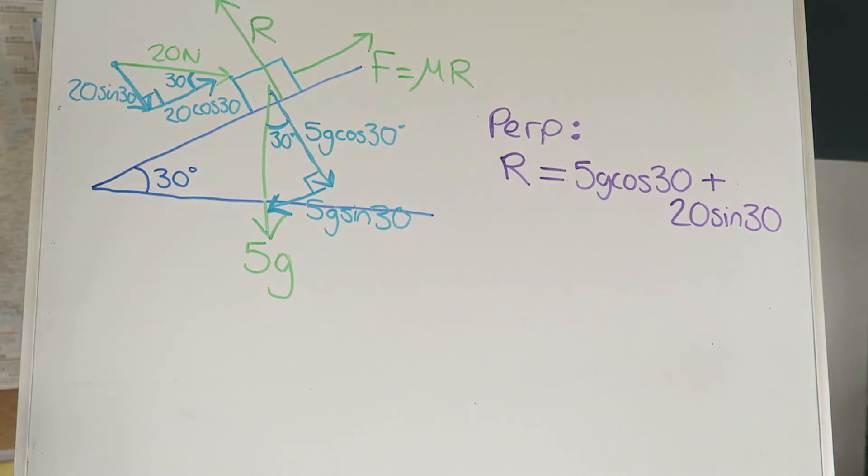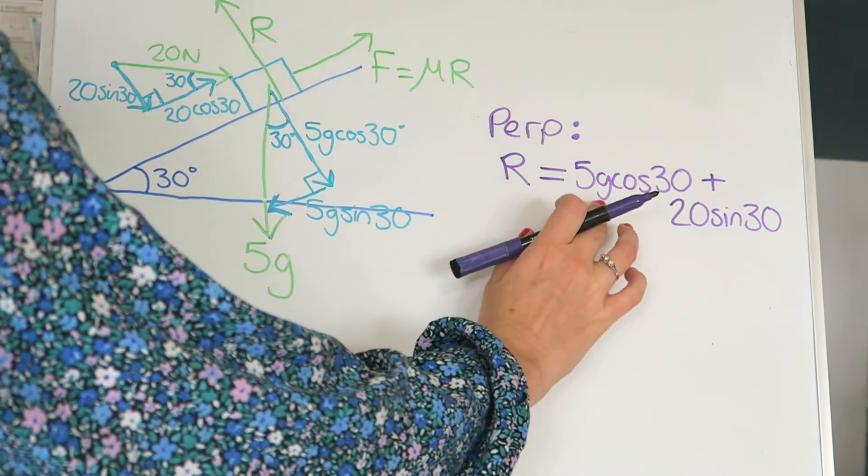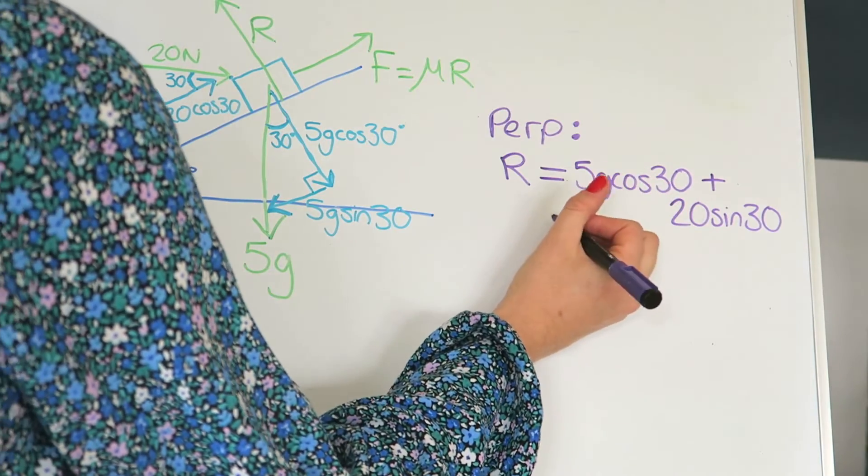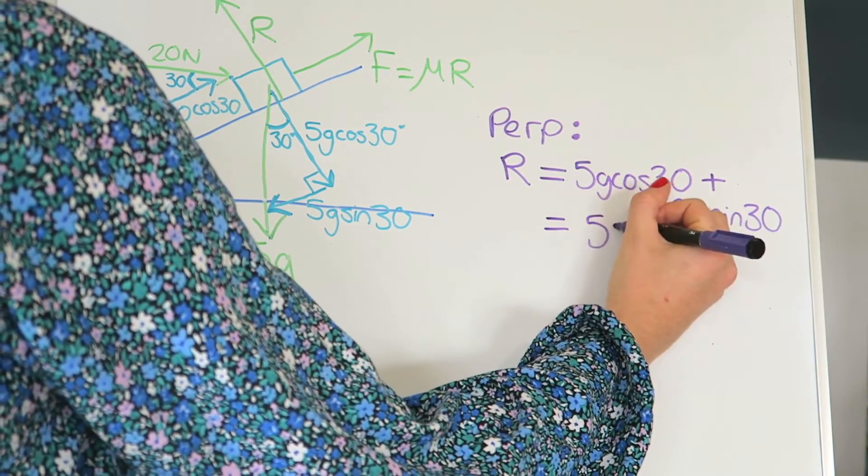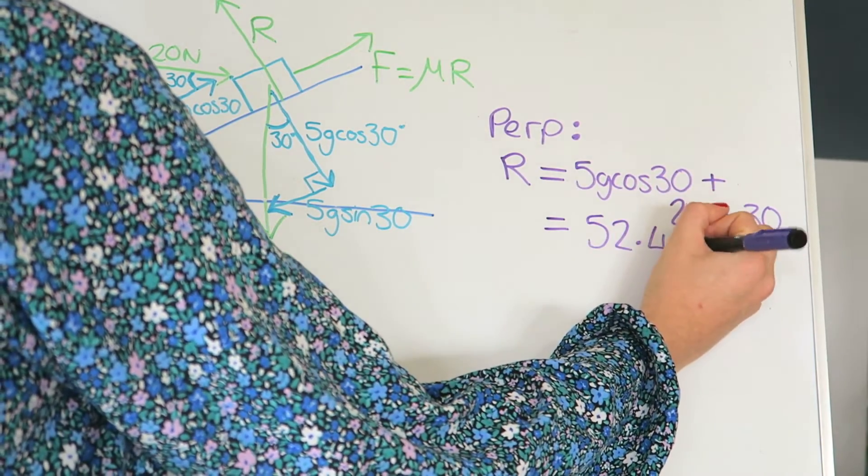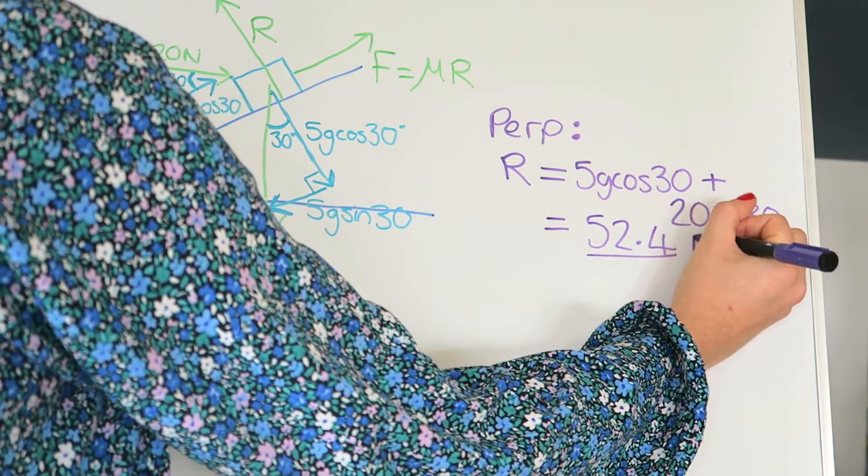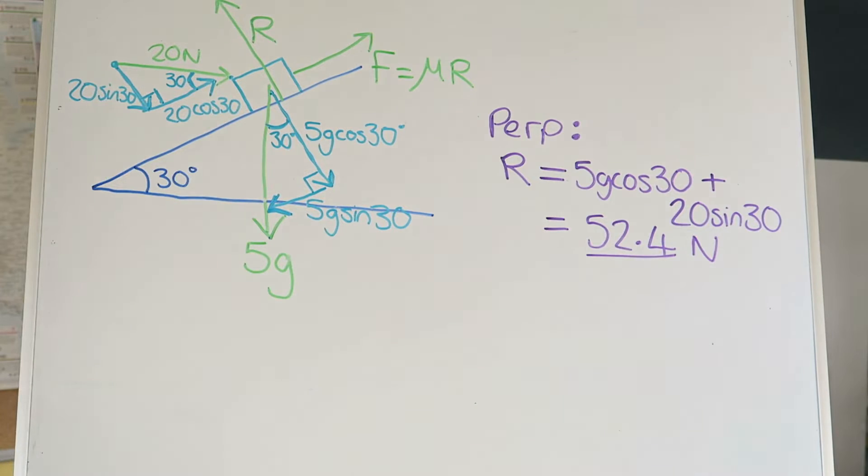Great, and that's actually something that you can just type into the calculator because these are all numbers. G, you'll probably use 9.8 or 9.81. I make that to be 52.4, and that's the first part of the question done. That's in Newtons. That's it. That's the magnitude of the reactive force. See, it's easy once you've got the diagram.